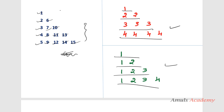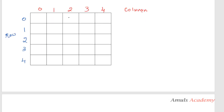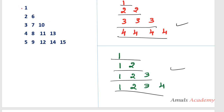First I'll show you how our program will print the numbers. If this is the row and column, first it will print at row 0, column 0, then row 0 column 1, column 2, column 3, column 4. After completing one row it goes to the next row and prints column 0, 1, 2, 3, 4. So we need to print: 1, then 2 and 6, then 3, 7, 10, then 4, 8, 11, 13, then 5, 9, 12, 14, 15.